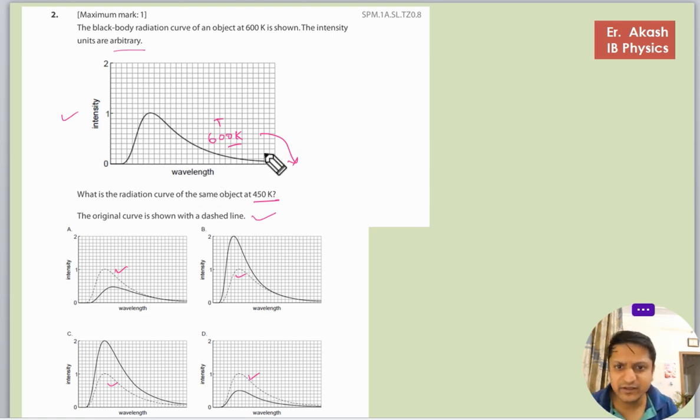We already know that when the temperature is less, the maximum lambda, the intensity when the intensity will be maximum and the lambda at which the intensity will be maximum will be here.